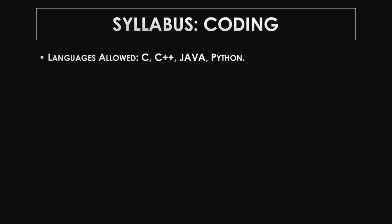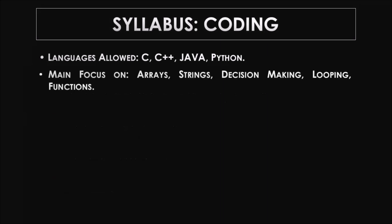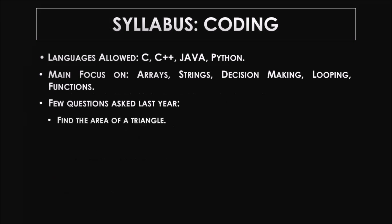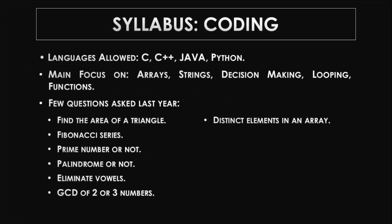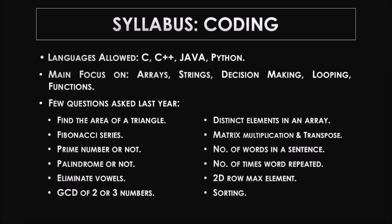Now we have the coding round. The languages allowed last year were C, C++, Java, and Python. The main focus is always on arrays, strings, decision making, looping, and functions. A few questions that were asked last year are shown here. They ask two questions in coding — one of easy difficulty level and the other intermediate to tough. Your program should satisfy all the test conditions with the correct expected output, so make sure you practice well.